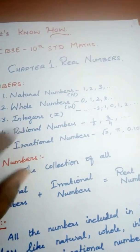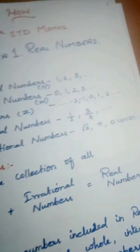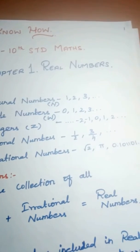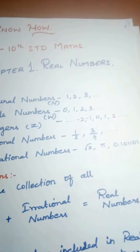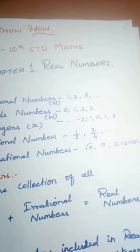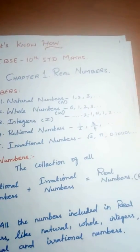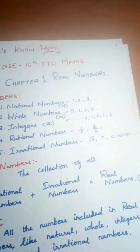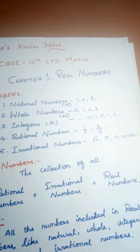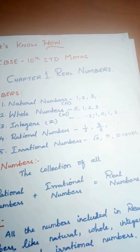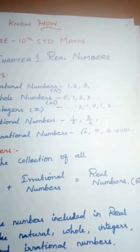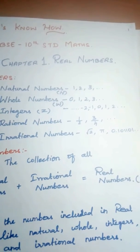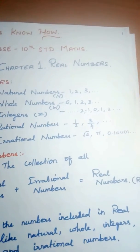Integers go more in depth — in integers, the negative part comes in. The negative parts, zero, and the positive parts together make integers. Rational numbers are numbers which can be written as fractions — they are also called ratios. Irrational numbers are numbers which cannot be written as a fraction; those are called irrational numbers.